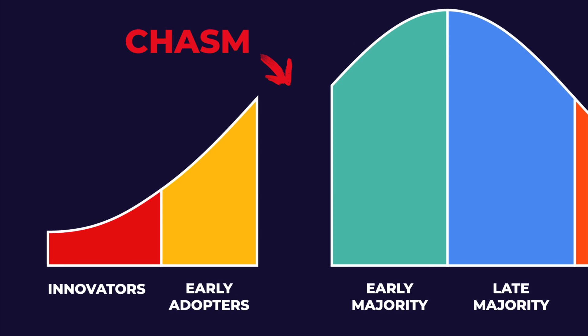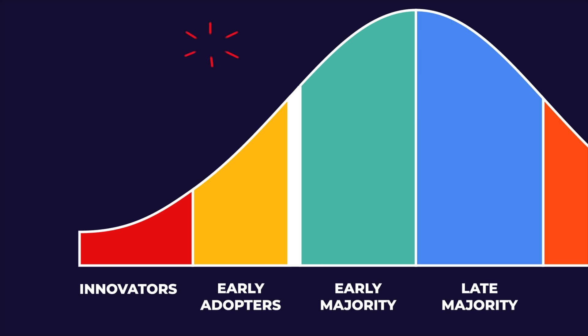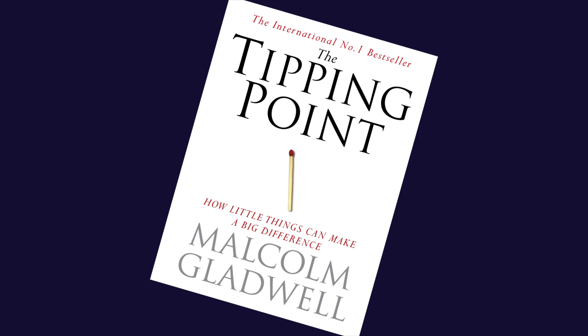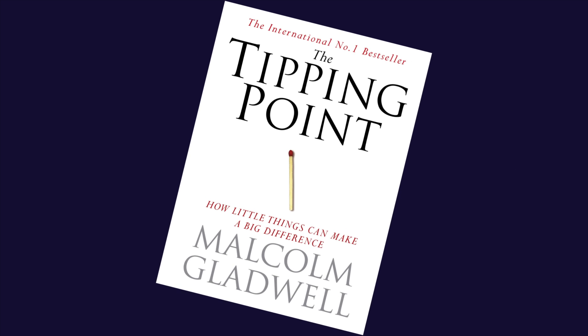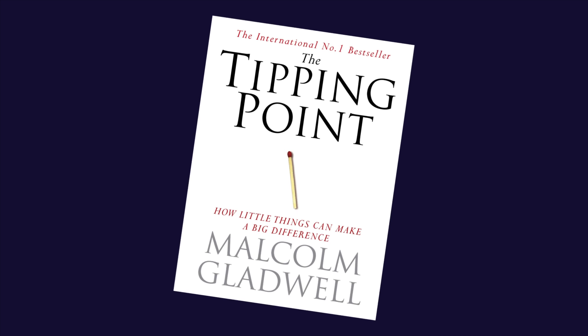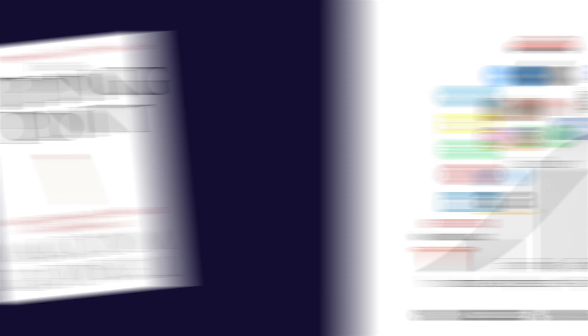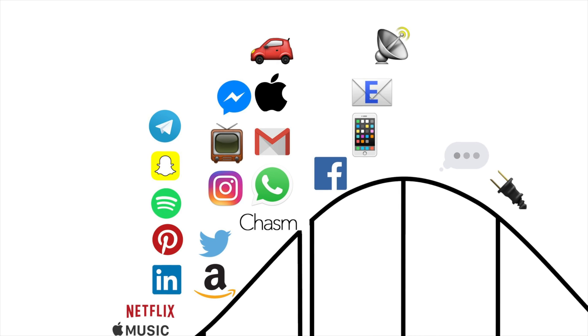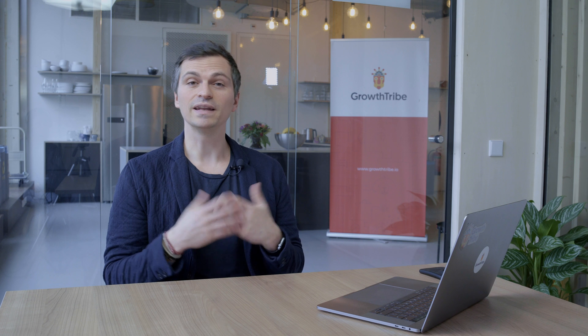The customer adoption curve has been adapted many times, notably by Geoffrey Moore in his book Crossing the Chasm, where he highlights that the most difficult move for a product or technology is to cross the chasm — the gap between the visionary early adopters and the pragmatic majority. To make or break your business, you'll want to cross that chasm. You can also relate this chasm to what Malcolm Gladwell calls the tipping point. Here are where some technologies stood in the adoption curve back in 2016.